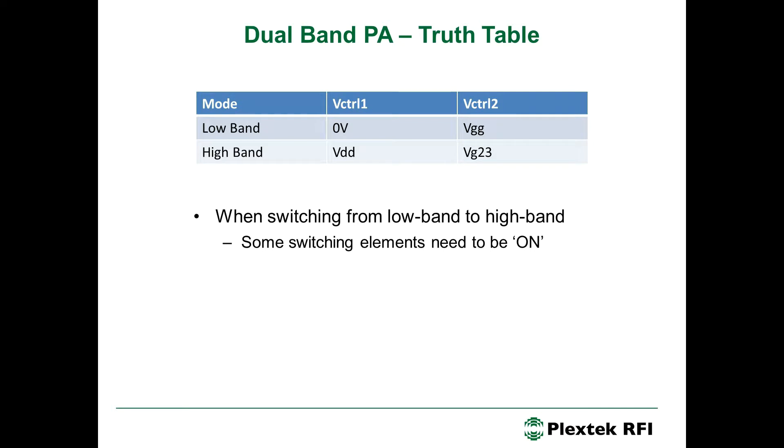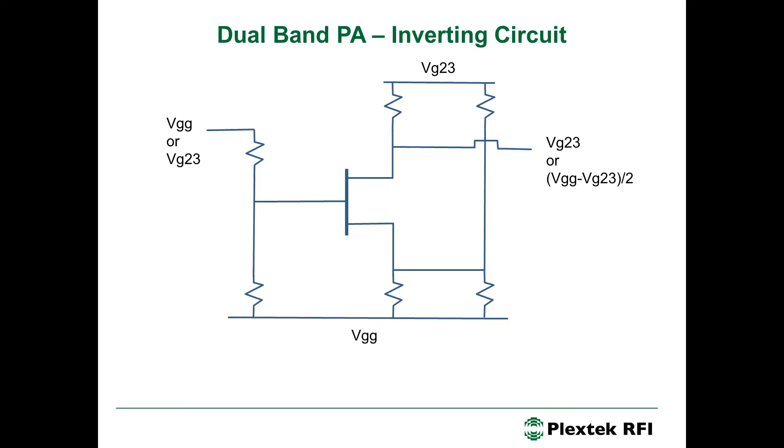So, when we switch from low band to high band, some switching elements need to be on and some switching elements need to be off. So, complementary control signals are required. And the way we provide complementary control is by using this inverting circuit that we came up with here. Now, implementing an inverting function on a depletion mode process can be quite tricky because the devices are normally on. So, you cannot pinch them off simply by pulling the gate down to the source, for example, as you could do in an enhancement mode.